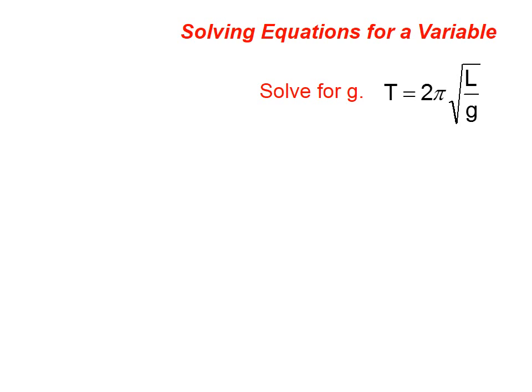Let's say we have this equation. We know what t is equal to. t is equal to 2 pi times the square root of l over g. What if I want to solve that equation for g? In other words, I want g by itself on one side of the equation. What would the other side of the equation look like?